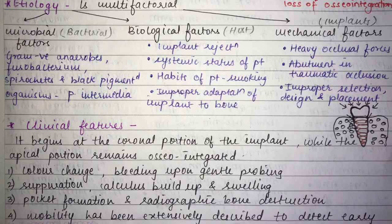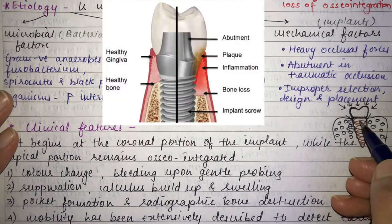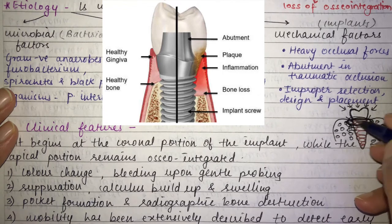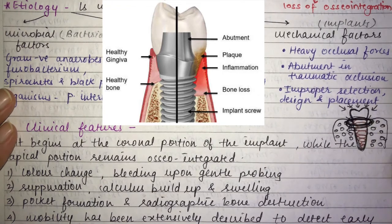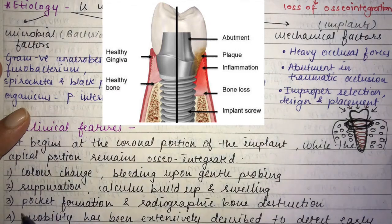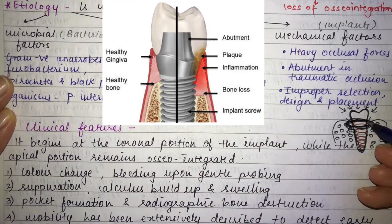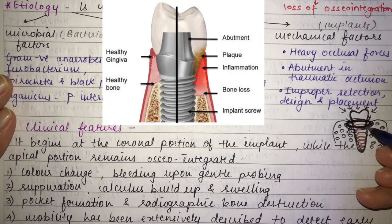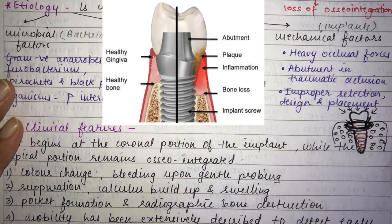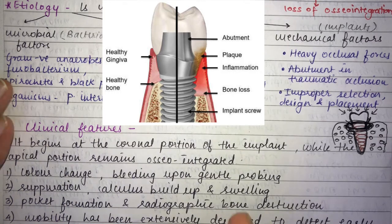Clinical features: peri-implantitis begins at the coronal portion of the implant while the apical portion remains osseointegrated. You will see bone loss in the coronal portion first. There can be color change, bleeding on probing, suppuration (pus formation), calculus buildup, and swelling. As bone is lost, space forms allowing calculus deposition, and pocket formation occurs.